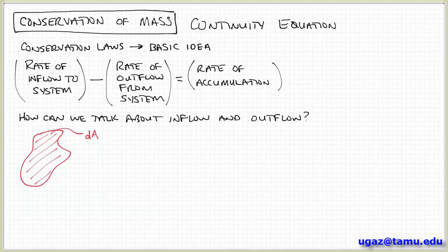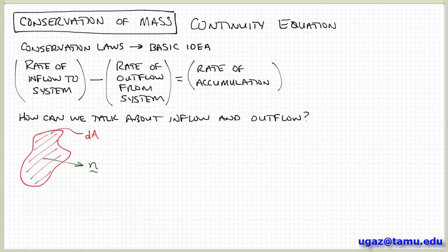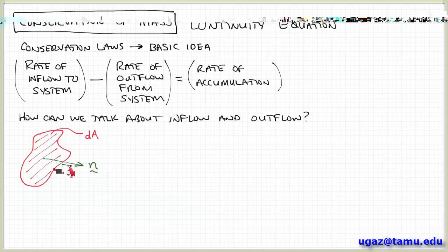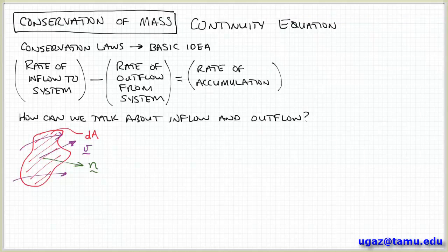The way we're going to introduce that is to consider how we would talk about the flow through a surface that has some area dA. I've drawn an arbitrary surface here — it's a differential size and the area of the surface is dA. This is a flat plane but it has an arbitrary shape. I can express the orientation of the surface in space by a normal vector n, which is a unit vector whose magnitude is 1 and points perpendicular to the surface. We use normal vectors to describe the orientation of surfaces in space.